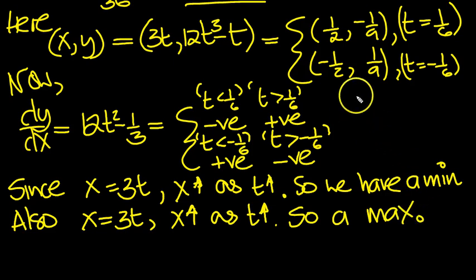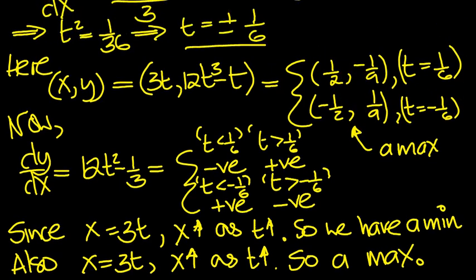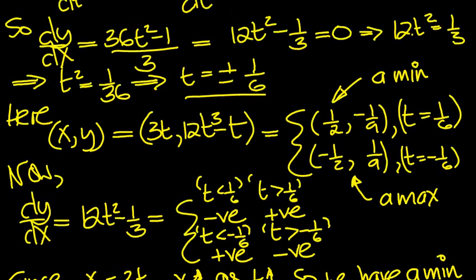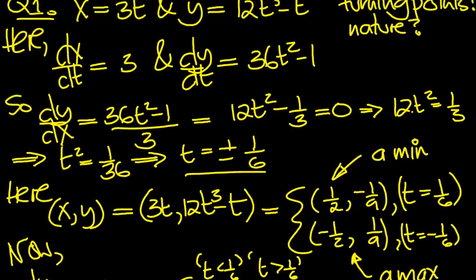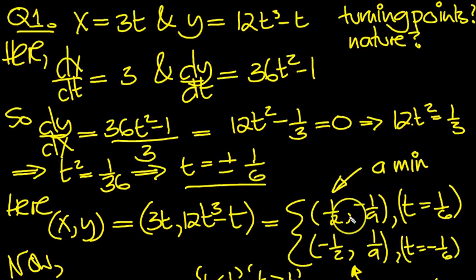There we go. So this coordinate here, when t was minus a sixth, is a max. And this coordinate up here, which I'll just move it up slightly, we just said down here that this is a min. So we've got our coordinates. Now let's have a look at that max and min at half and minus a half then. And we think it's a ninth. These coordinates are our turning points.